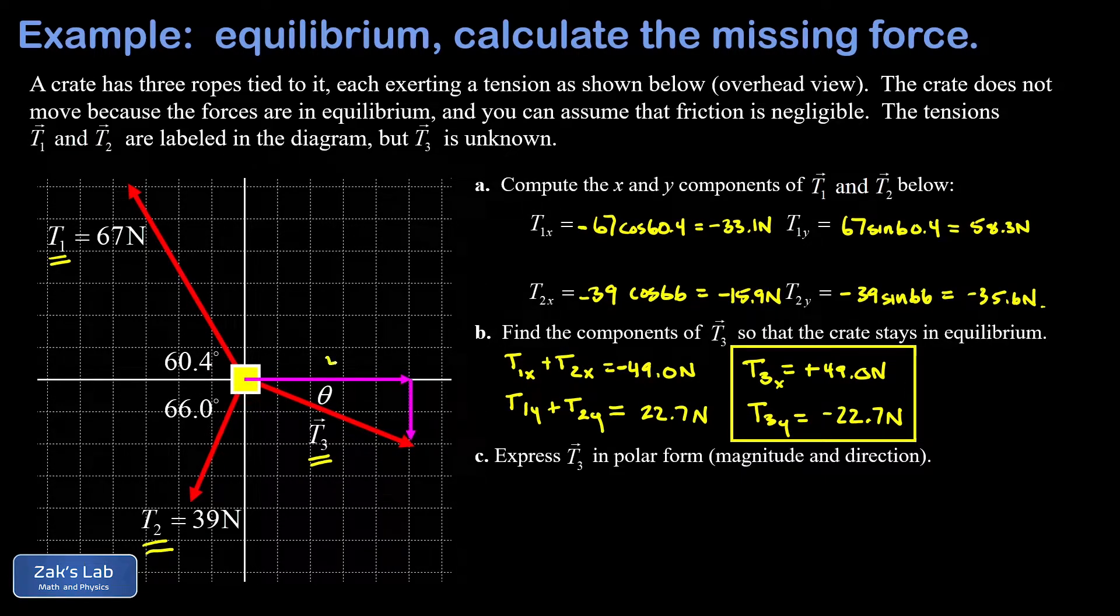So there's t3x—a 49.0 newton x component vector pointing to the right—and then t3y, which has a magnitude of 22.7 newtons and points downward. Now to get t3 we simply use the Pythagorean theorem.